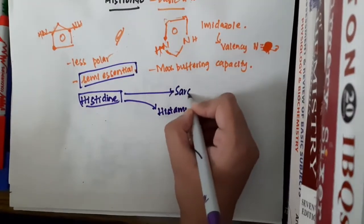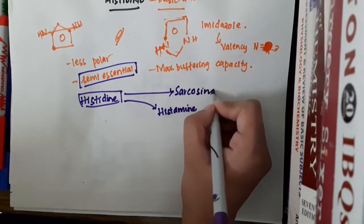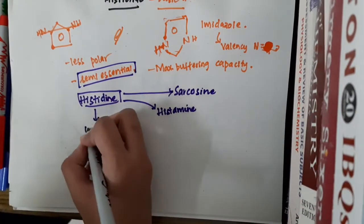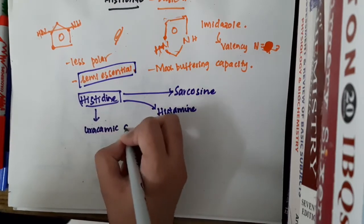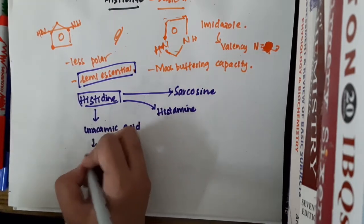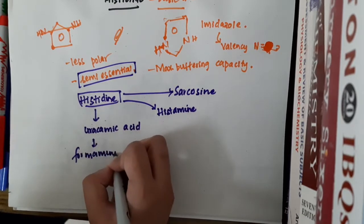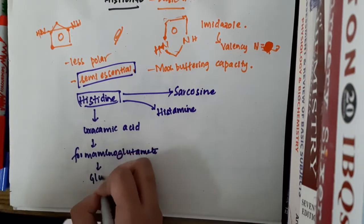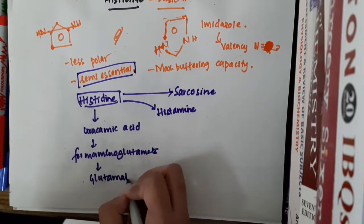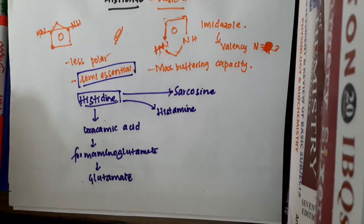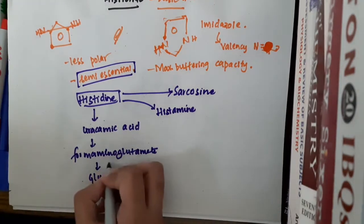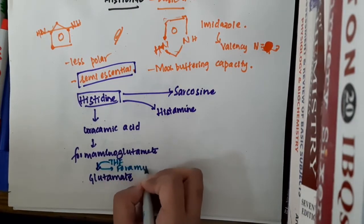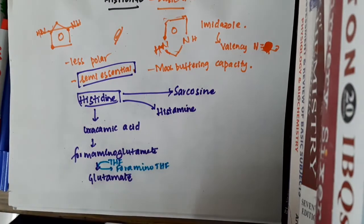Histidine also forms sarcosine. Histidine is degraded to urocanate acid, which in turn forms formiminoglutamate, which will again give rise to glutamate.